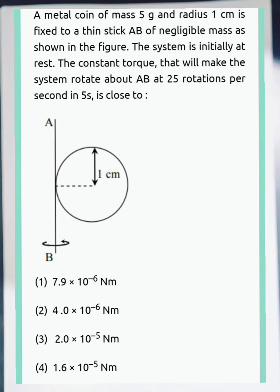A metal coin of mass 5 grams and radius 1 centimeter is fixed to a stick AB of negligible mass as shown in the figure. The system is initially at rest. The constant torque that will make the system rotate about AB at 25 rotations per second in 5 seconds is equal to what?